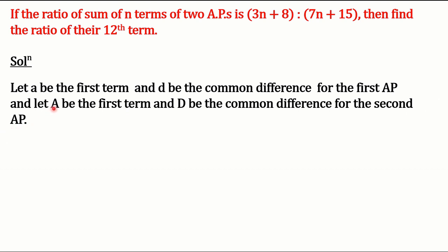We have supposed capital A and capital D for the second AP, and small a and small d for the first AP. Please keep this in mind. The question asks us to find the ratio of their twelfth term, and we know the twelfth term is represented by T12.